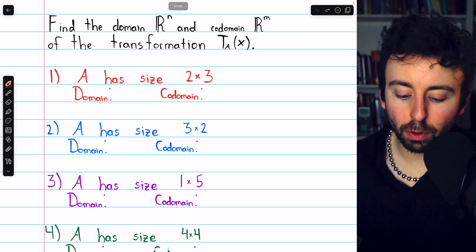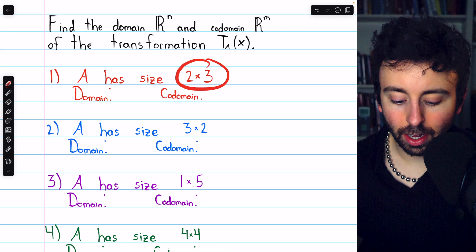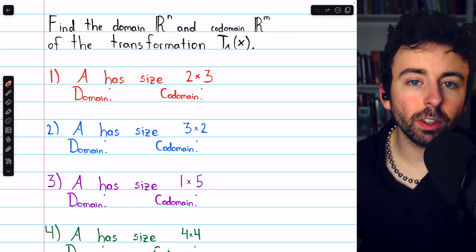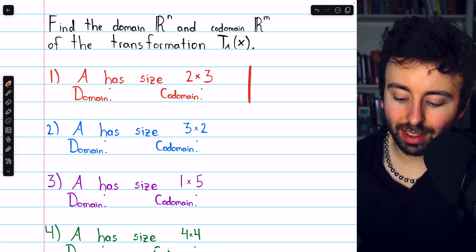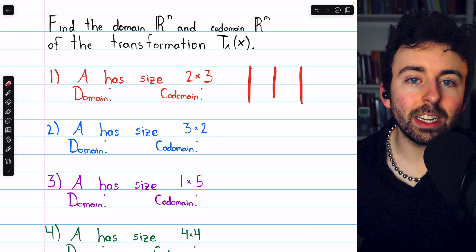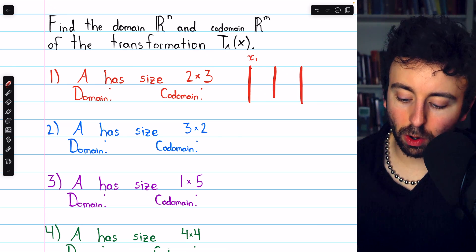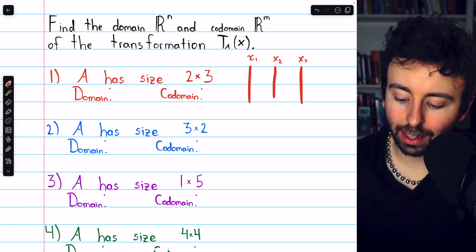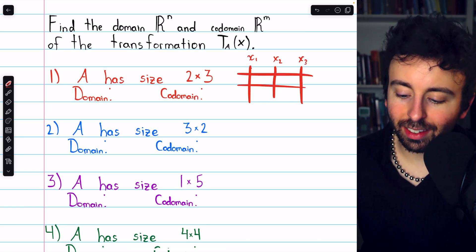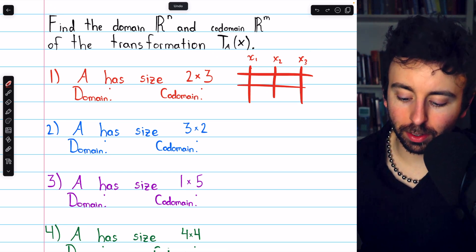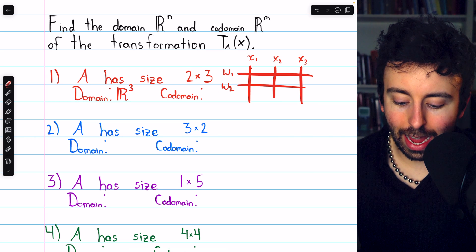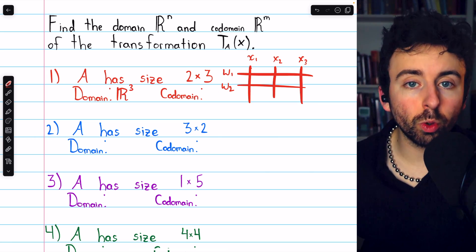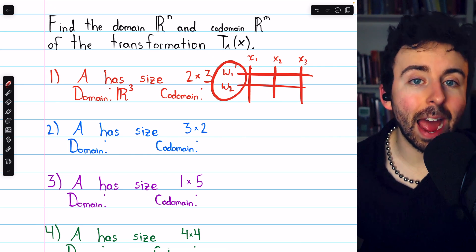Let's begin with number one. We're told that the standard matrix A has size 2×3. So what's the domain of this transformation T_A(x)? Well, since the standard matrix has size 2×3, that means there are three columns, one for each of the input variables. These columns might correspond to x₁, x₂, and x₃. Each row will tell us how to combine these three input variables to get the output variables, which we might call w₁ and w₂. So we can see that the domain is actually R³, and the codomain is R². We're going to get two components in the output.